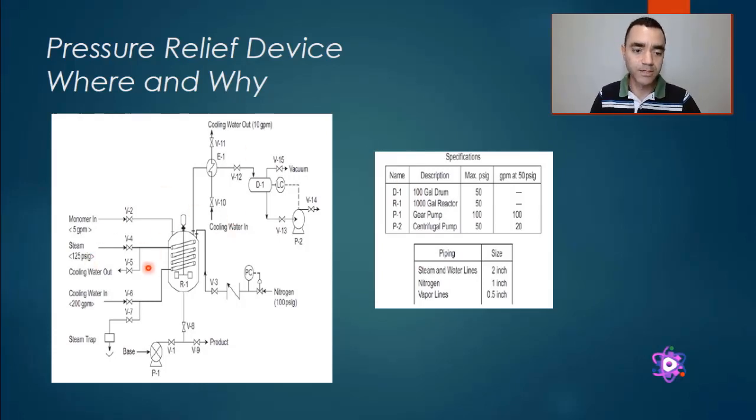We have a polymerization reactor that uses nitrogen as a blanket. The vapor phase of this polymerization reactor passes through a condenser, goes to a vessel separator, and is pumped.